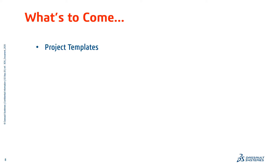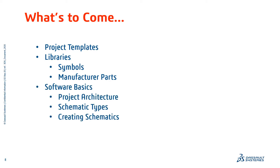In the next several videos, we're going to talk about project templates and properly setting them up. A lot of the terms used in SOLIDWORKS Electrical may differ from terms you've used in previous tools, and we'll get into that in the specific video about project templates. We'll also talk about libraries — breaking down all the different types of libraries inside SOLIDWORKS Electrical, particularly your symbols and manufacturer parts, which are the two most commonly used. We'll cover software basics such as the project architecture, books, folders, your schematic types, the different types of sheets you can choose from, creating schematics, drawing wires, and drawing symbols.